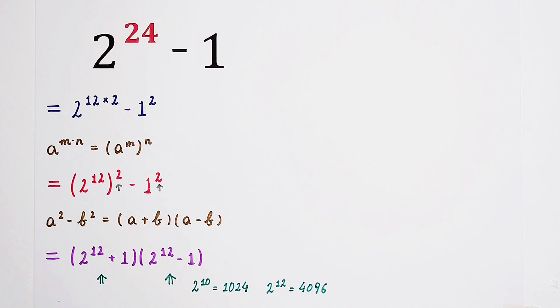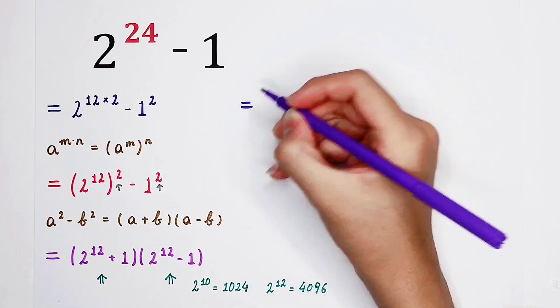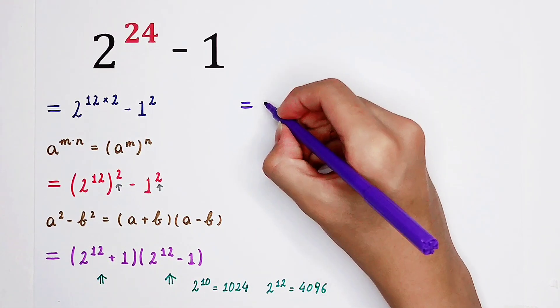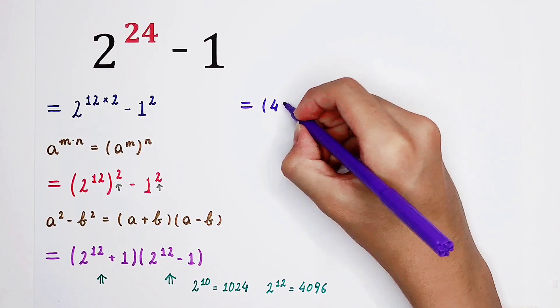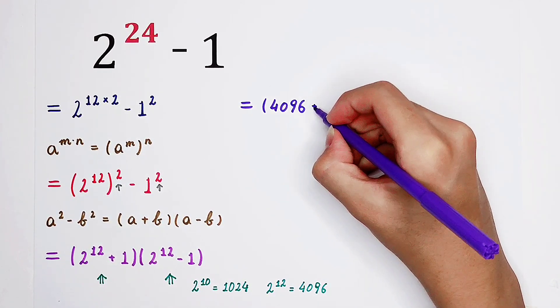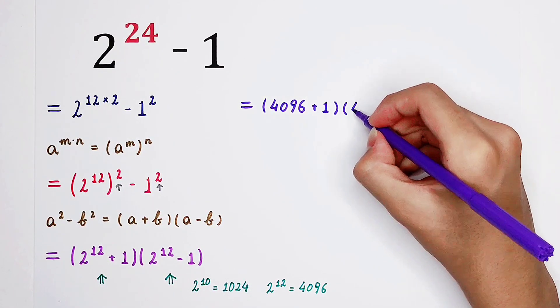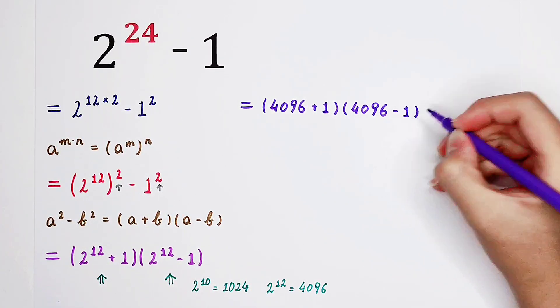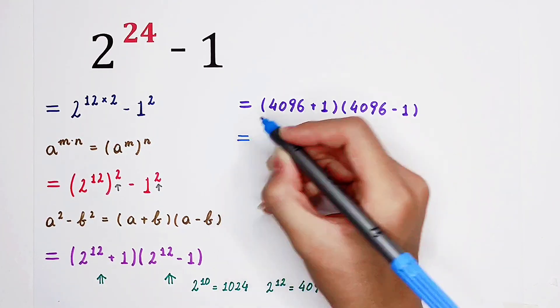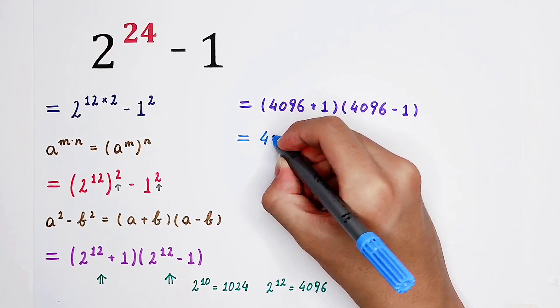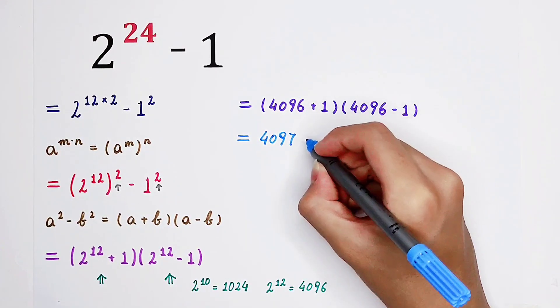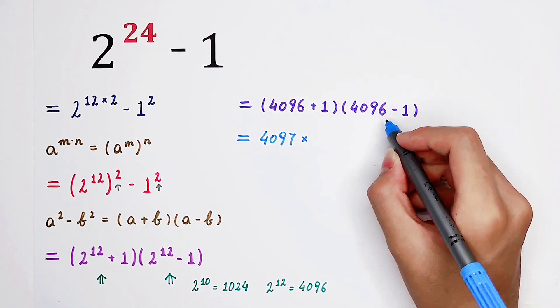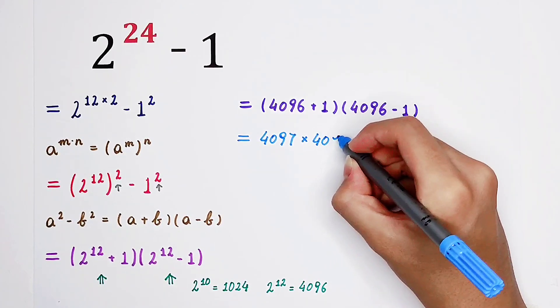So that's the result. So we can substitute it here. For 2 to the power of 12. So 2 to the power of 12 plus 1 is 4096 plus 1, and then times 4096 minus 1. So then 4096 plus 1 is 4097. 4096 minus 1 is 4095.